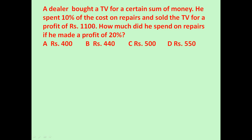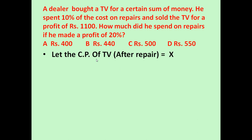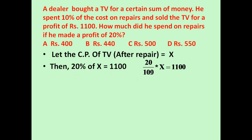20% profit and Rs 1100 profit are the same. So let us assume the cost price of the TV after repair is X, because he spent 10% on repairs. With this cost price he sold it and earned Rs 1100 profit, which equals 20% profit. It means 20% of X is equal to Rs 1100, so 20/100 × X = 1100.